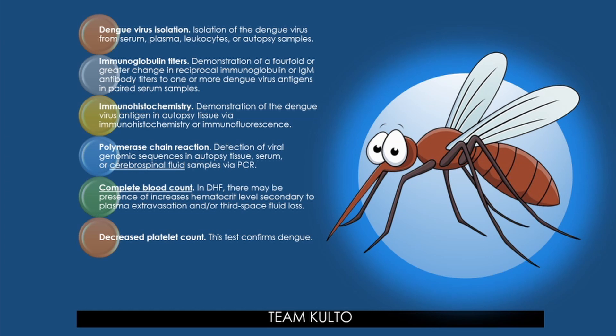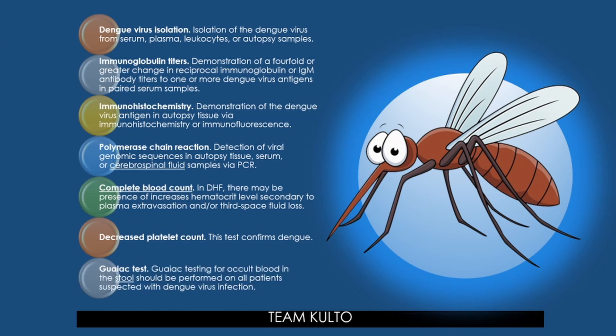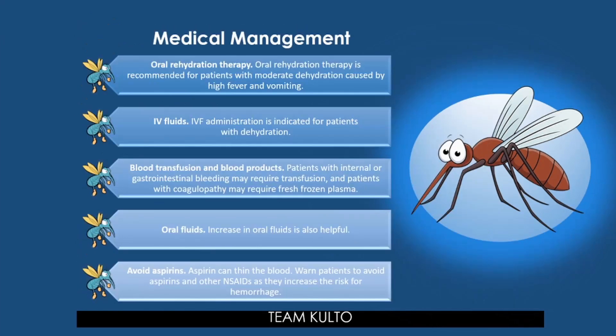The confirmatory test for dengue is the CBC platelet count. The guaiac test involves placing a fecal sample on guaiac paper and applying hydrogen peroxide — in the presence of blood, a blue reaction product appears within seconds.